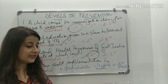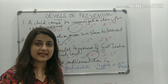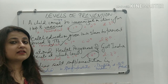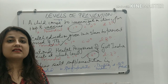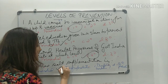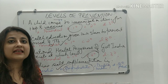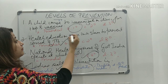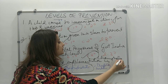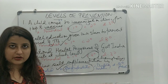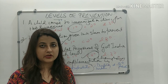Next: iodine salt supplementation — is it primordial, specific protection, disability limitation, or secondary prevention? Iodine salt supplementation is done to prevent iodine deficiency disorders, so this is specific protection — we are specifically protecting by giving iodine supplementation. Similarly, chemoprophylaxis is also a form of specific protection, so the correct answer for that would also be specific protection, i.e., primary prevention.